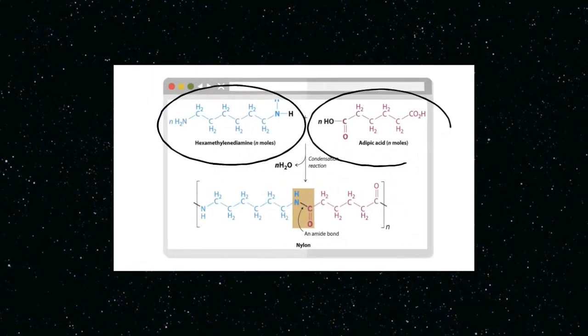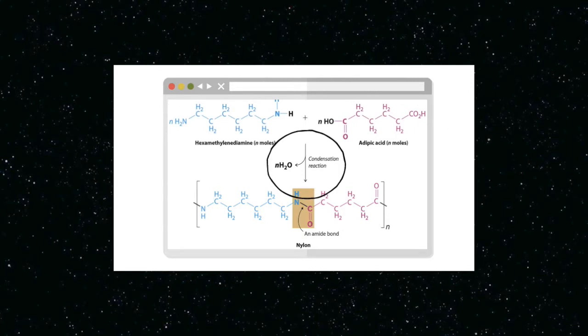The process starts when hexamethylenediamine was mixed together with adipic acid as a result of condensation reaction. All in all, the two chemicals were bonded through an amide or peptide bond, which is a type of covalent bond between two amino acid molecules. This molecular structure is called nylon.